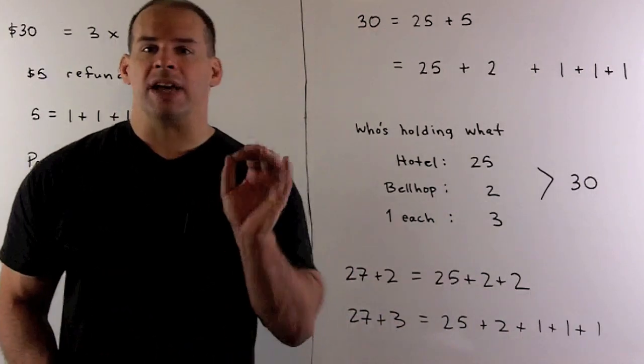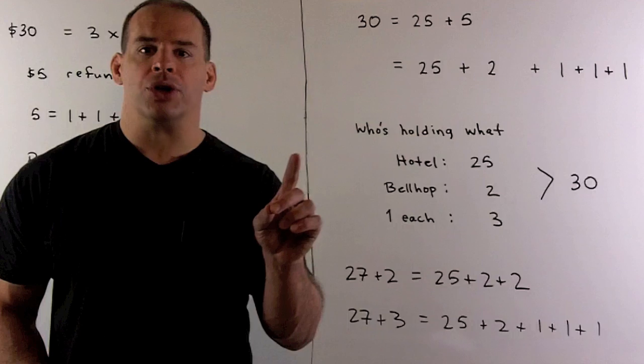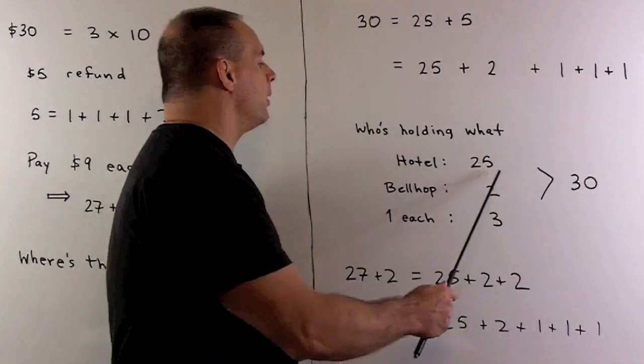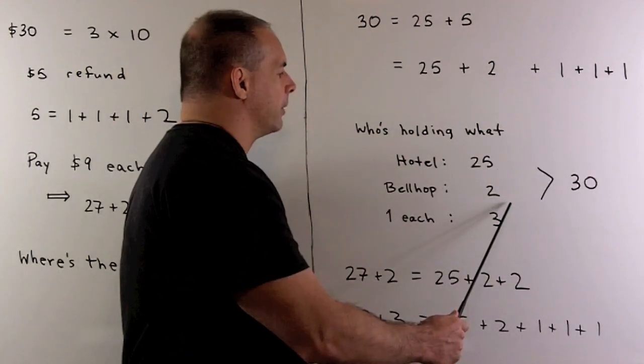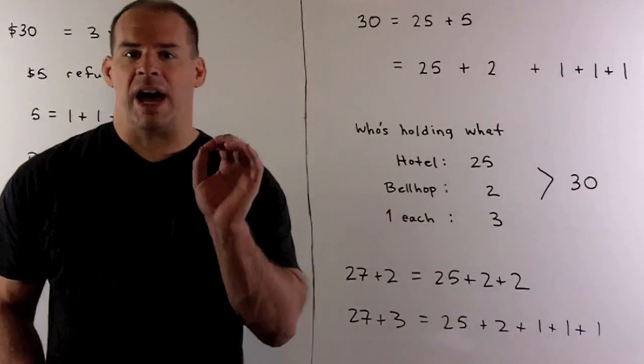So you'll note the guests have paid out $27 to cover the hotel bill and the tip to the bellhop. So that's your three times $9.